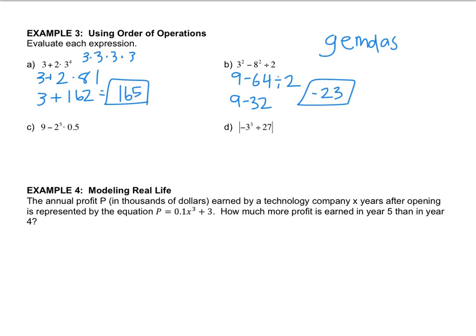Then the next one, I have 2 to the 5th comes first. So that's 9 minus 2 to the 5th is 2 used 5 times. So that is 32 times 0.5. So multiplication comes next. 9 minus 16, which is negative 7.